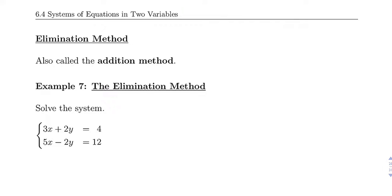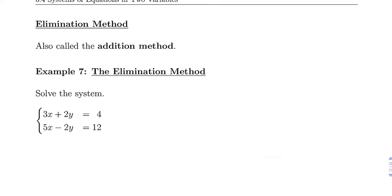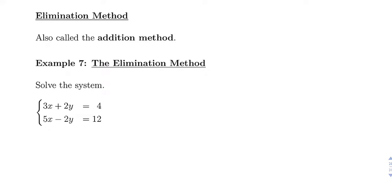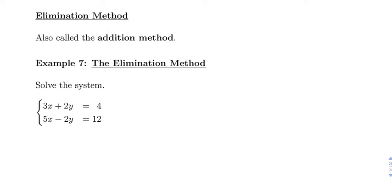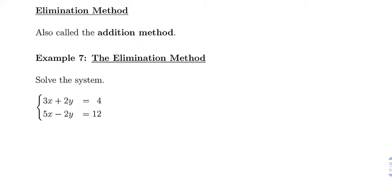With this next example we're going to formally look at the elimination method, also called the addition method. We've seen it in action and this is fairly easy to use. If we look at this example we notice that one of our variables are the exact same, they only differ in sign. So once we get it to that point, all we really have to do is add the two equations.